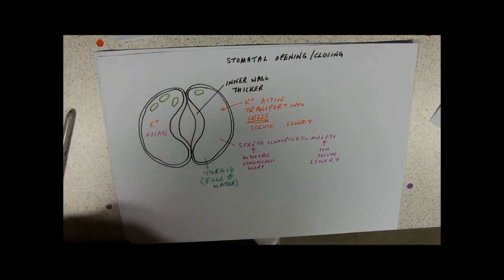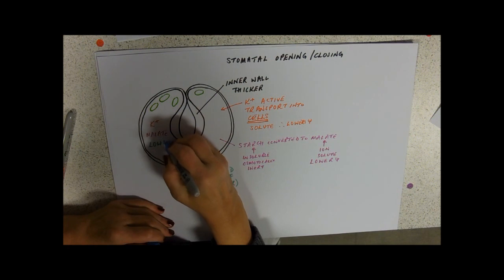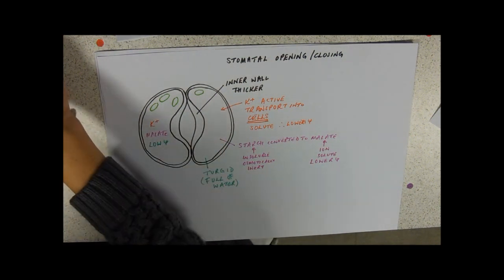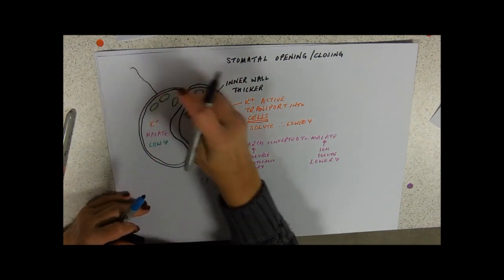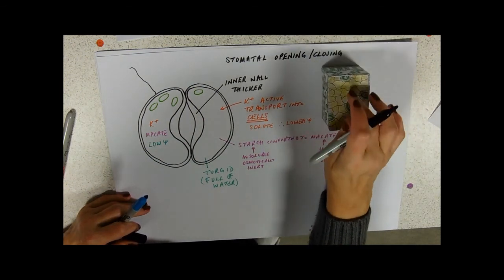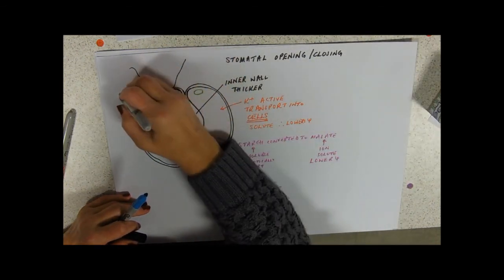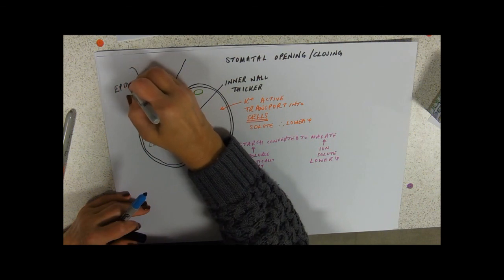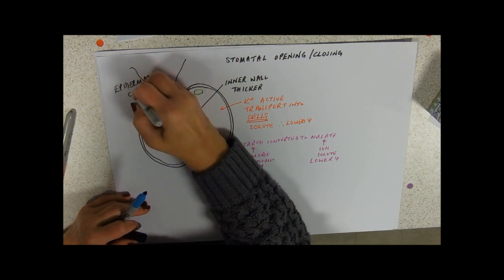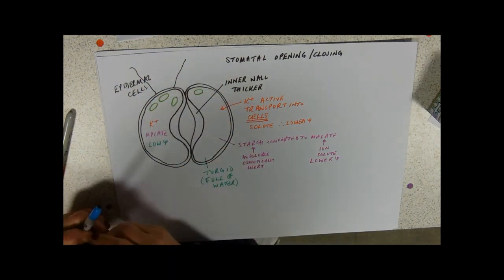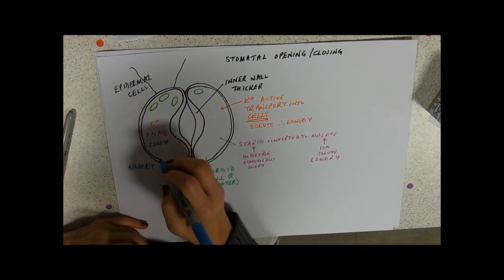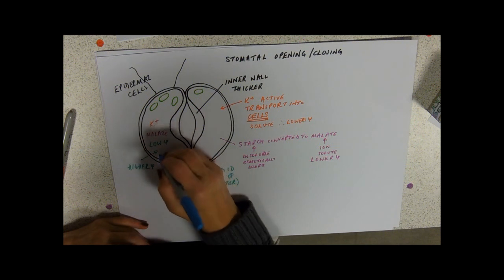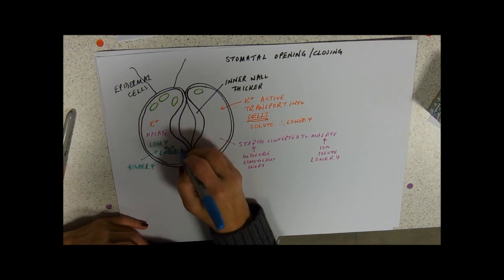So in our cells we have got potassium ions and we've got malate and a low water potential. And in the epidermal cells surrounding - so remember that we've got, you know, there are other cells around here, give a little diagram - these are the cells, these are epidermal cells, and those epidermal cells have a higher water potential, so water is going to move in by osmosis.